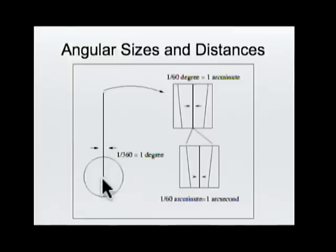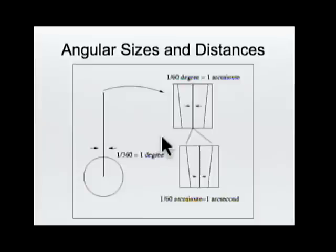However objects in the sky are so small that they actually appear smaller than that. The moon and the sun are the only things that appear to be one degree across. For that reason we need to subdivide the degree even further. So we'll get this one degree, zoom way in, and subdivide this degree into 60 equal parts. Each one of those parts will be called an arc minute. So there are 60 arc minutes in one degree.